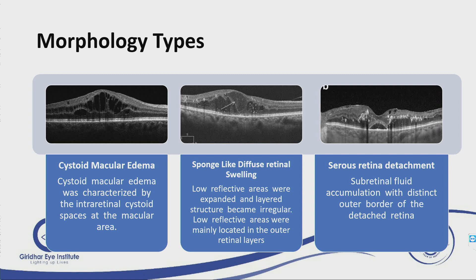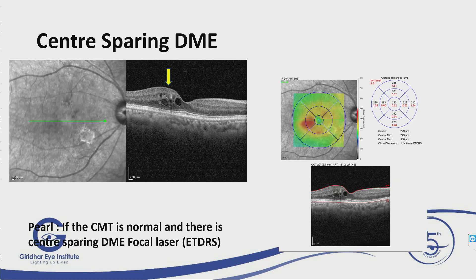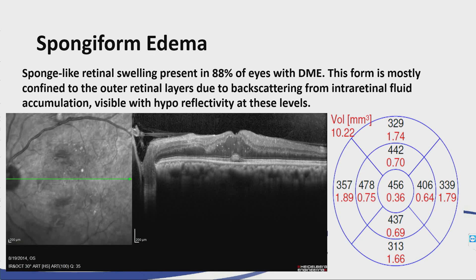The classification includes central non-involving DME — these cases we always try to treat with laser if there are leaking microaneurysms. This is a central non-involving case where the central thickness is okay, just next to the center. The standard treatment is focal laser. Spongiform edema is present in 88 percent of cases, and central macular thickness is important in follow-up but don't treat just based on this.